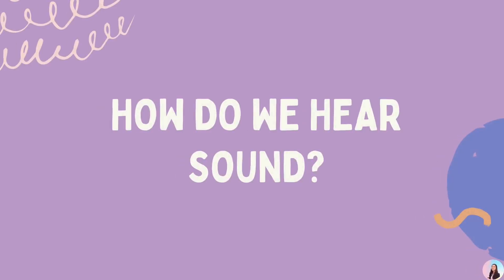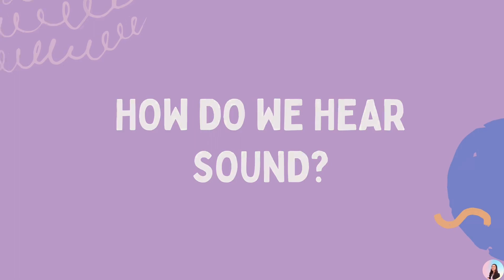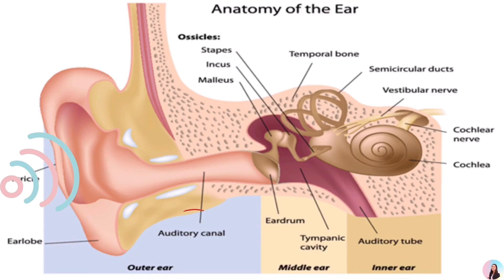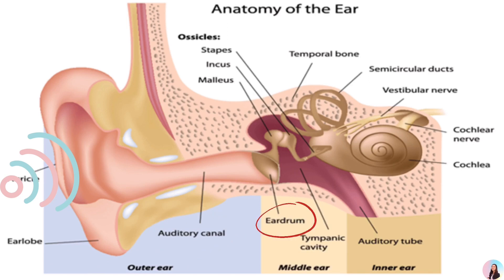We hear sound through our ears. The ear has three main divisions: the outer ear, the middle ear, and the inner ear. When sound waves strike our ears, the column of air travels in the external auditory canal. This causes the eardrum to set into vibration, and this vibration is transmitted to the middle ear.